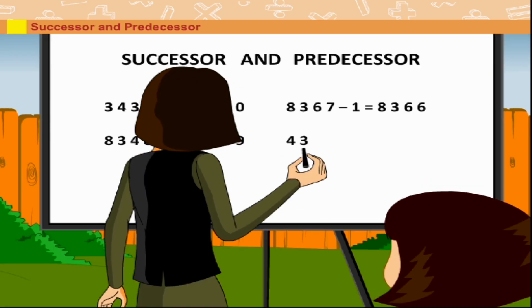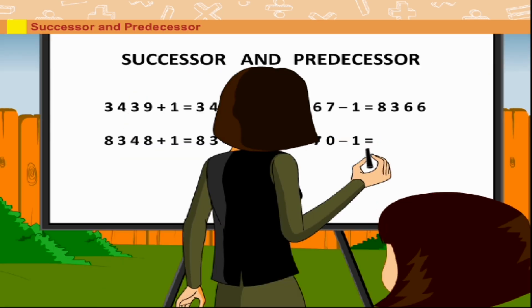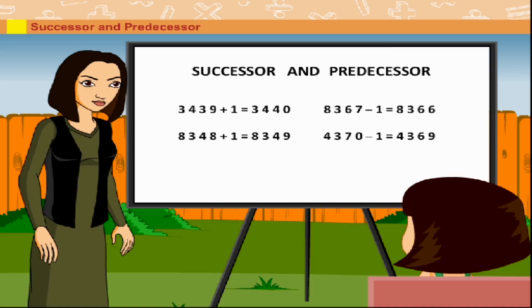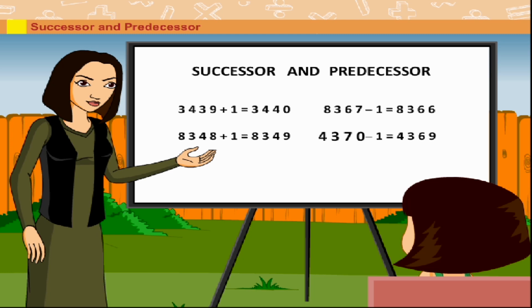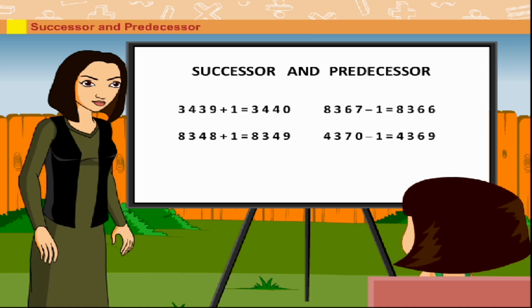Similarly, 4369 is the predecessor of 4370. 4370 minus 1 is equal to 4369. Shanta says, Thank you, ma'am.